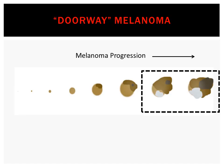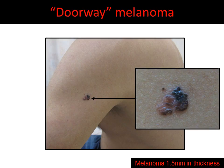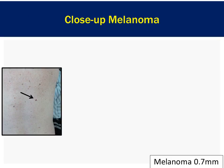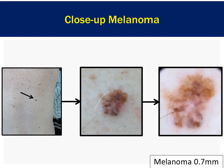In the first part I discussed doorway melanomas — melanomas that are morphologically straightforward. Here's an example. This melanoma is an obvious ugly duckling and shows multiple ABCD criteria. I also discussed melanomas that from scanning magnification are less apparent, but the closer we get clinically and dermoscopically, the more criteria we see for melanoma.